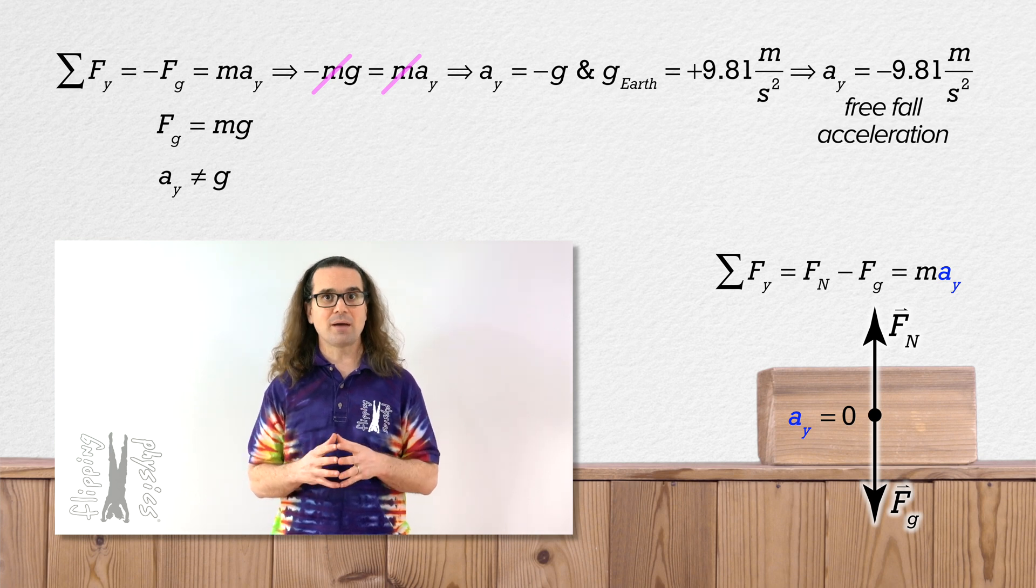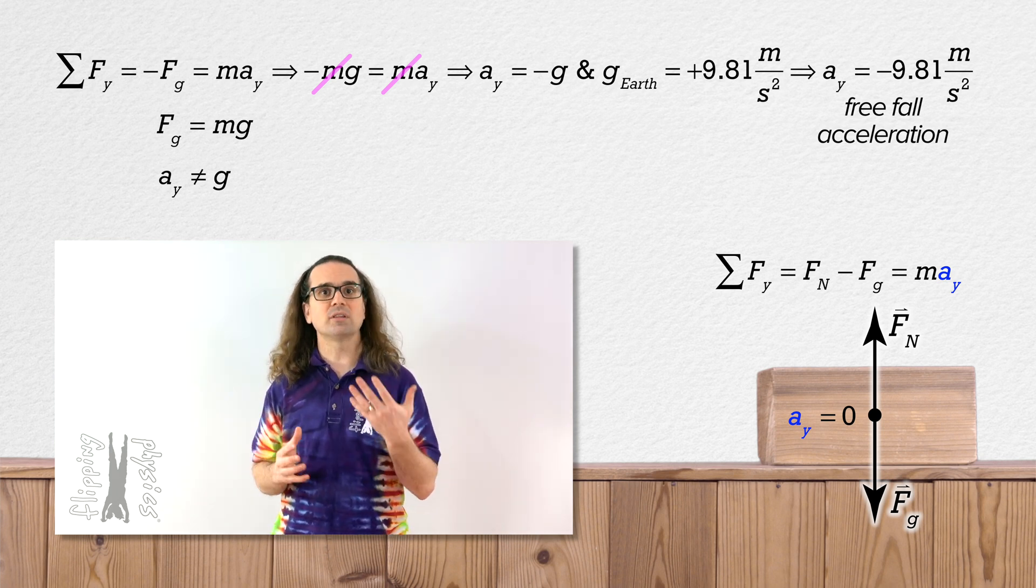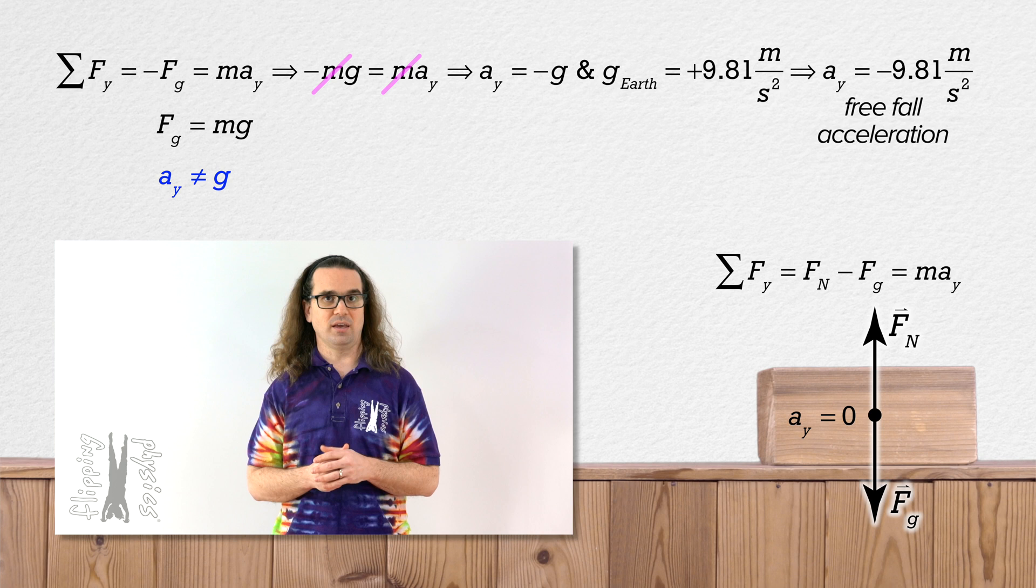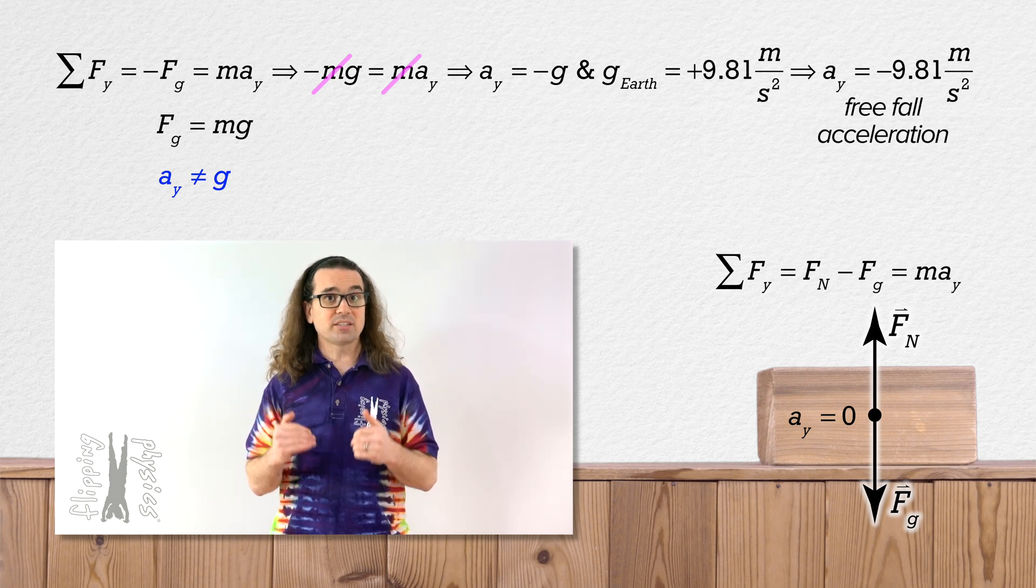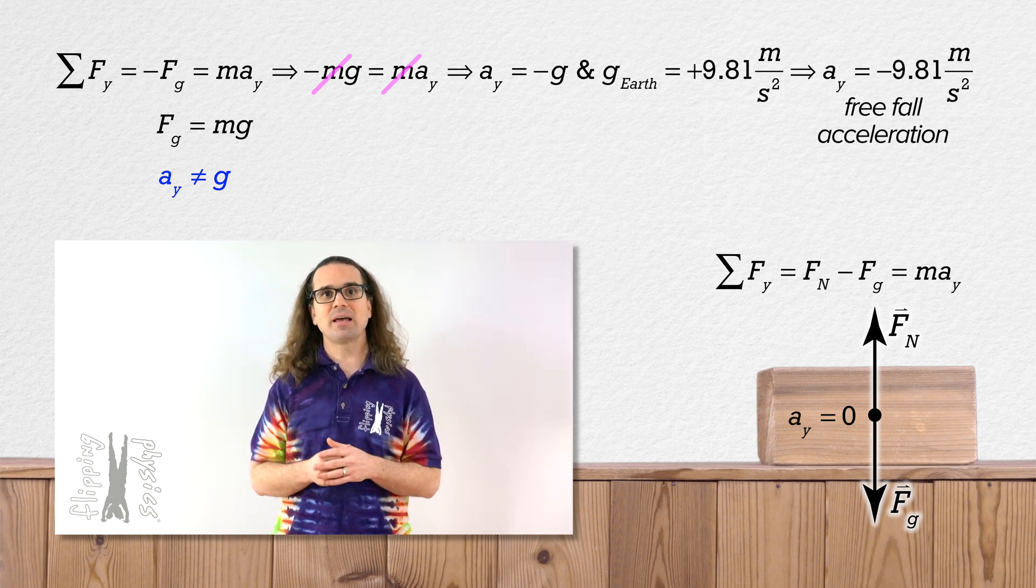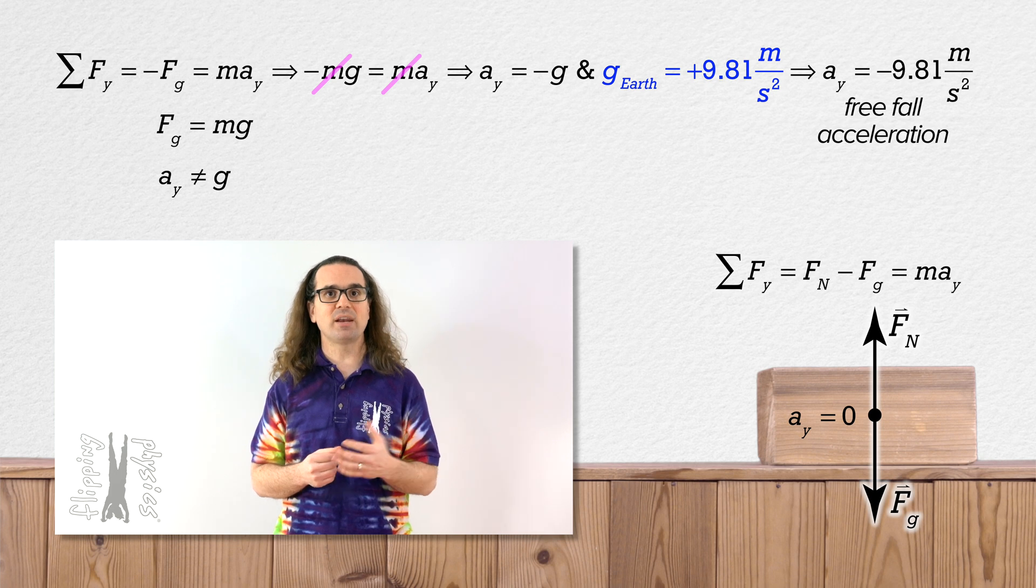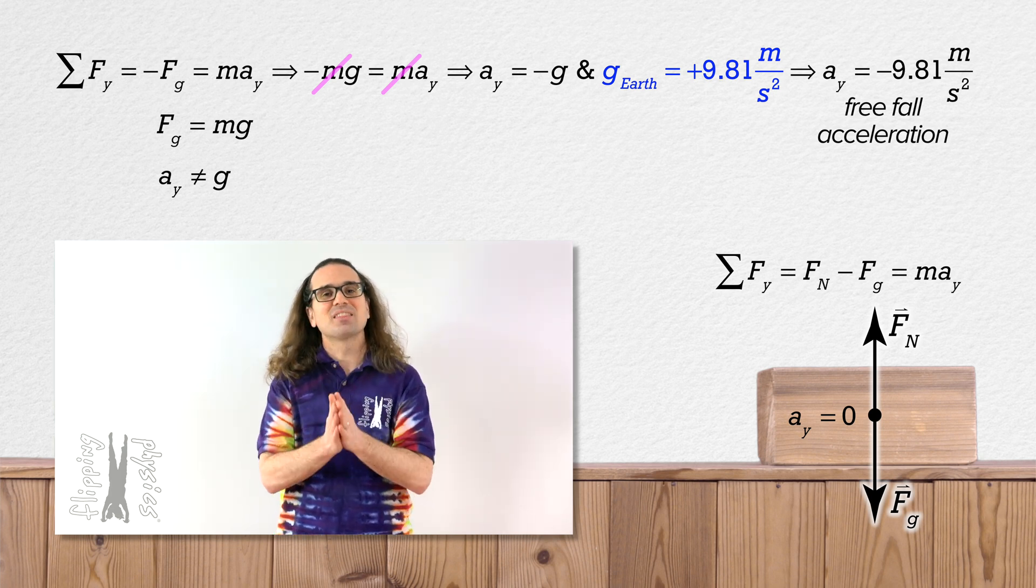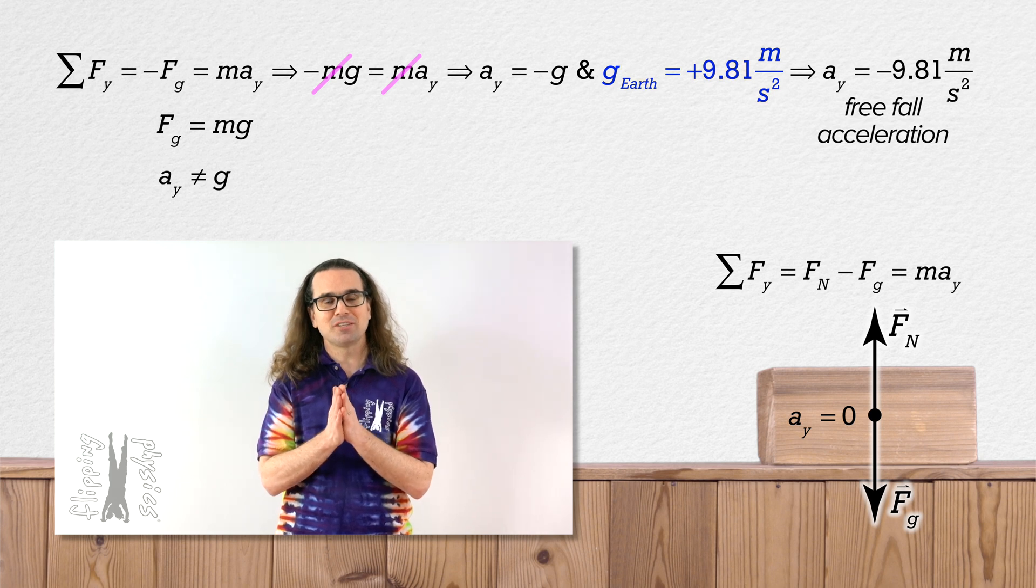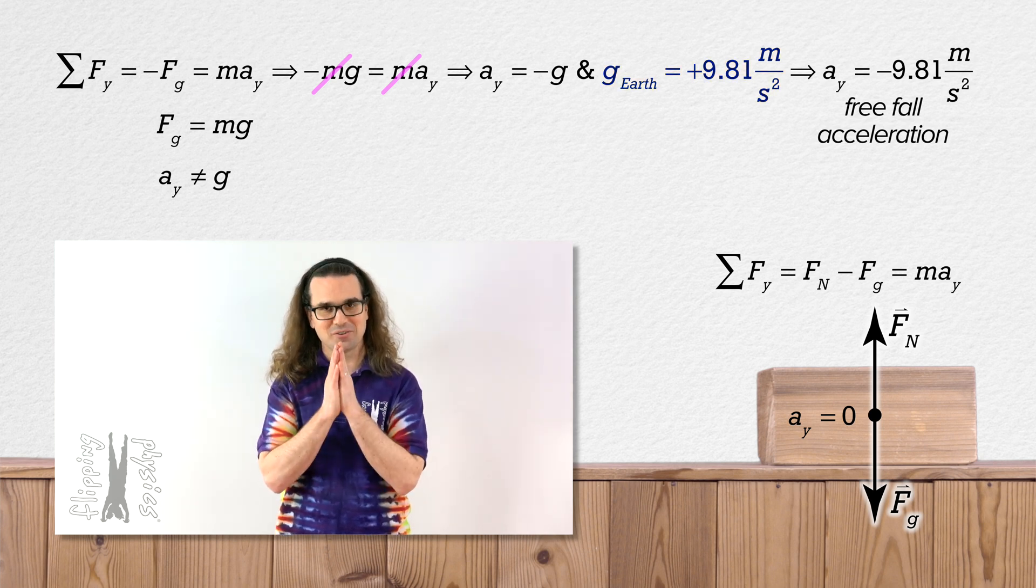Again, the acceleration of the object and the acceleration due to gravity, or little g, are two different things. And the acceleration due to gravity near the surface of planet Earth is positive 9.81 meters per second squared. Fine. Okay. We believe you, Mr. Pete. Thank you very much for learning with me. Thank you very much for joining me today. I enjoyed learning with you.